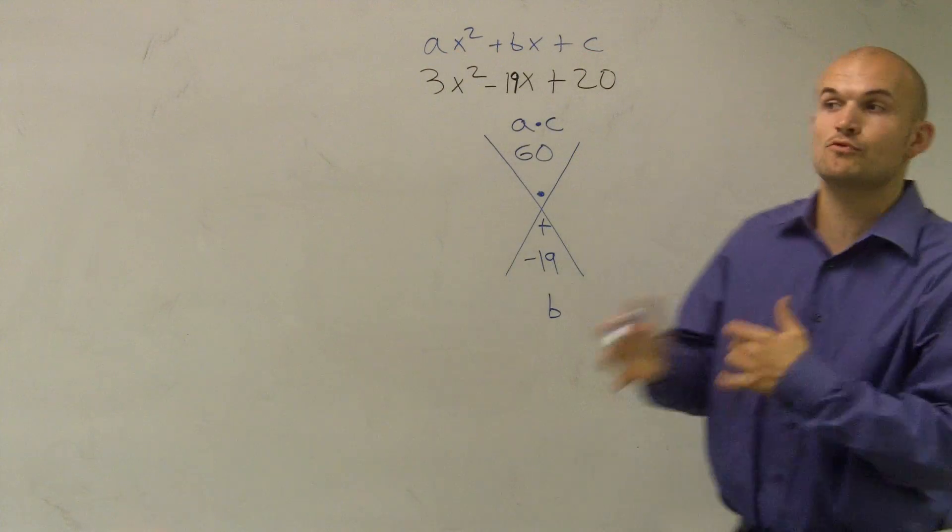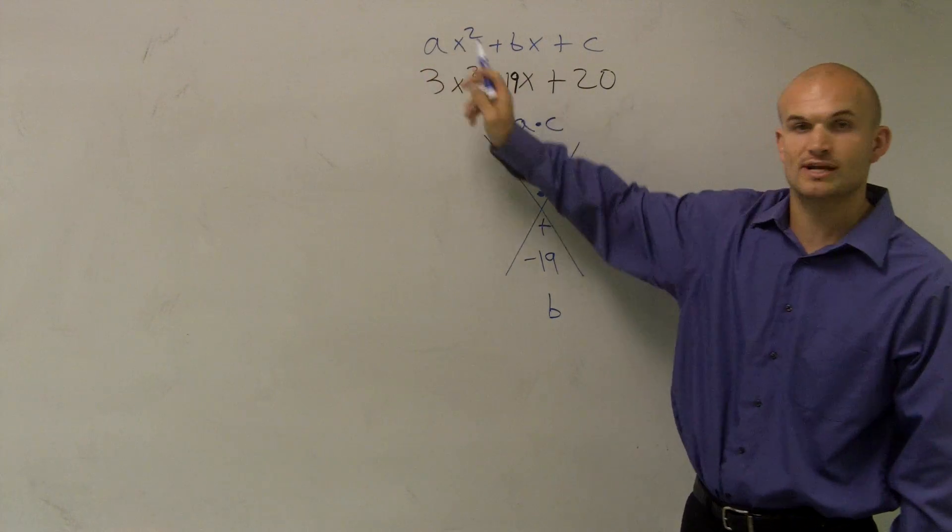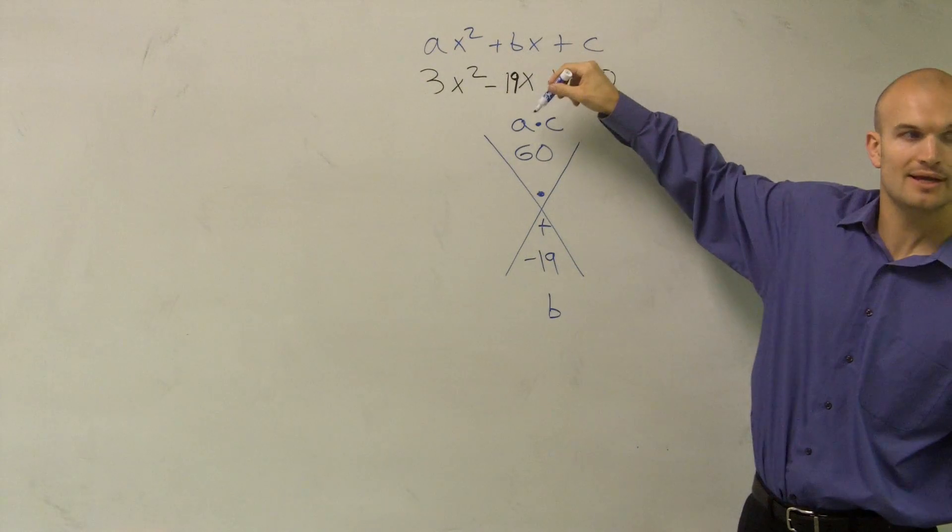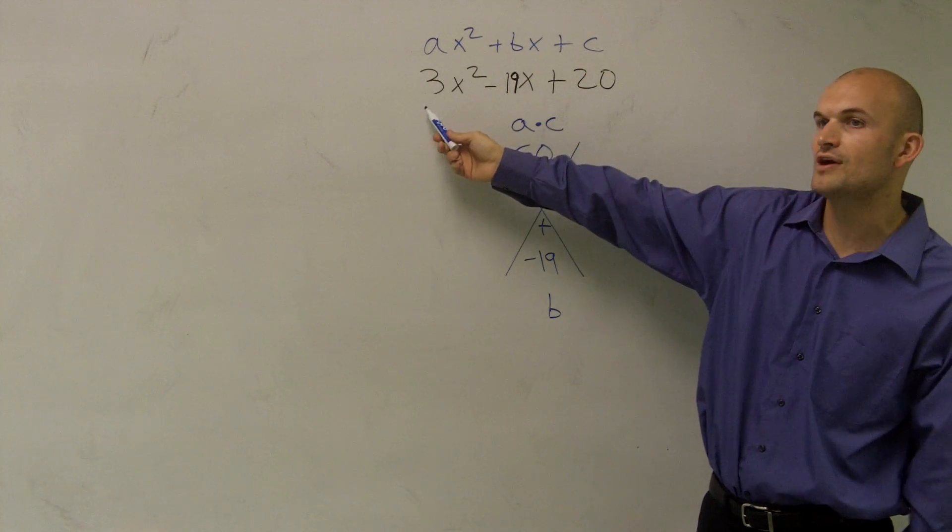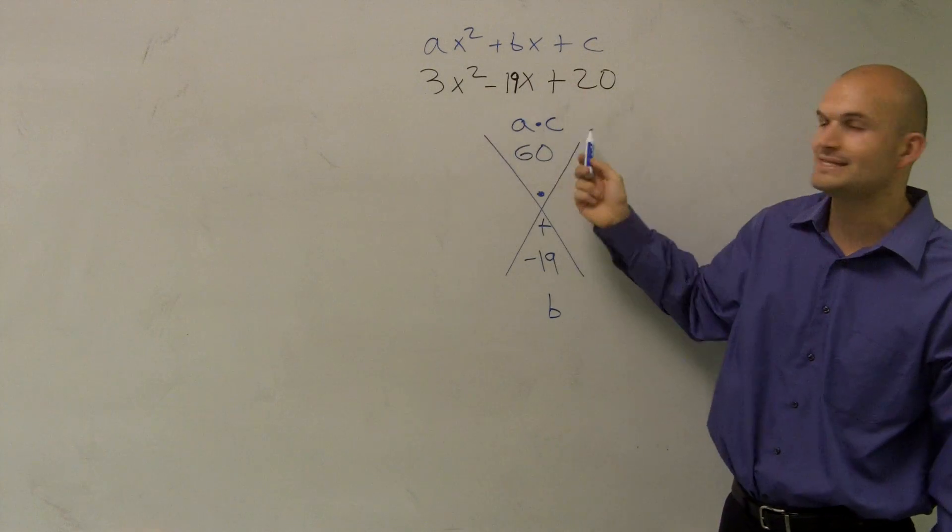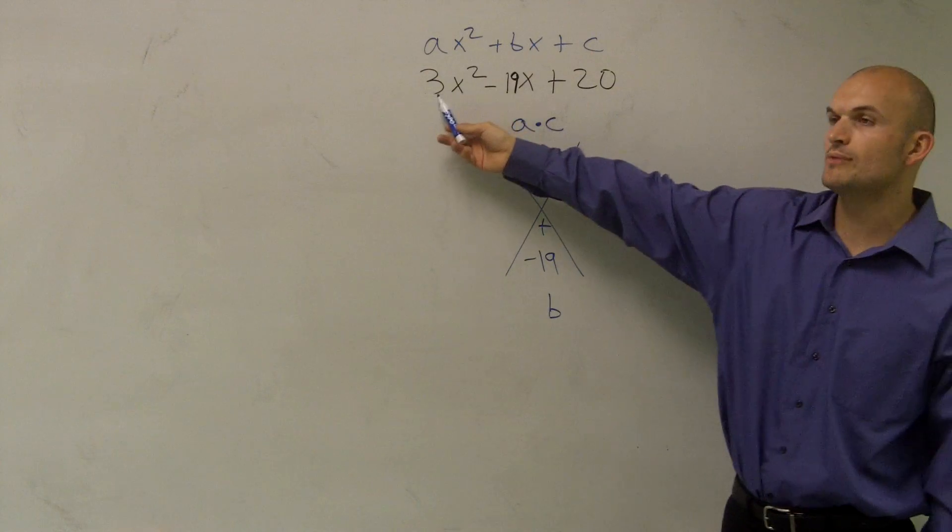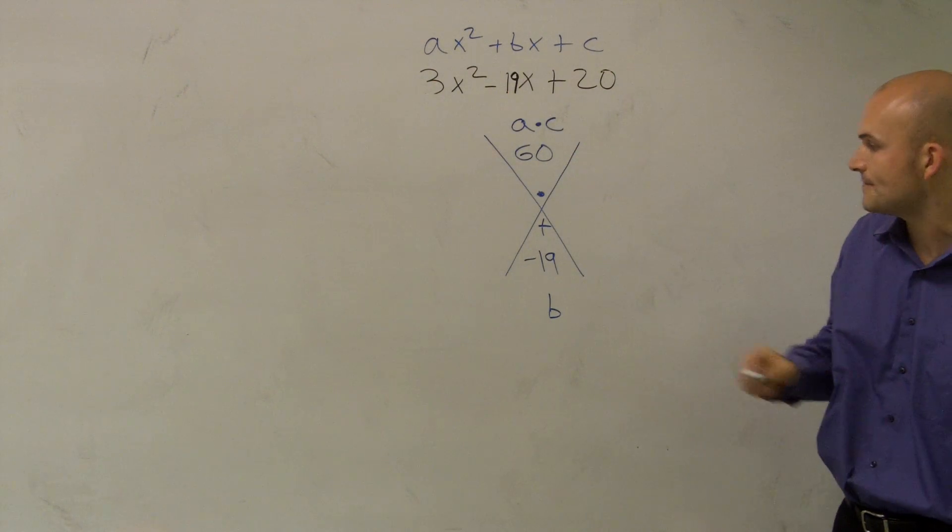Now, this is very similar to the problems that we worked on before, but the difference is our A is now greater than 1. And notice, before we always just wrote down C, right? But now, when there's a number in front, I need to make sure I multiply that A times C, because when there was no number in front, there was 1. So 1 times C always just gave us C. That's why we make sure we multiply that A.